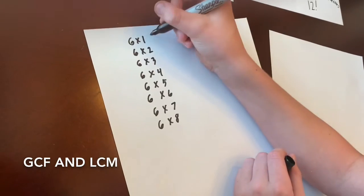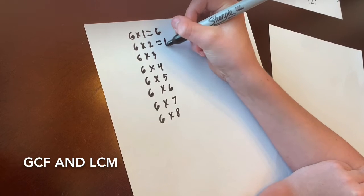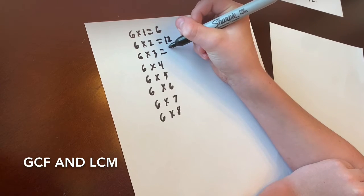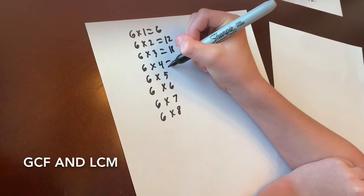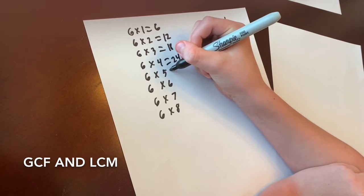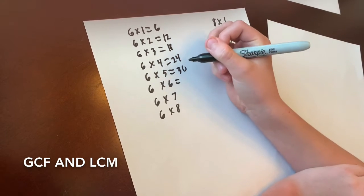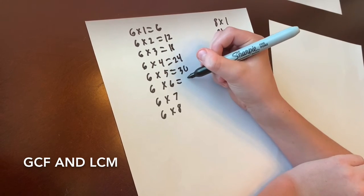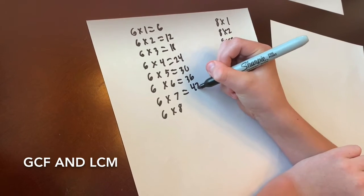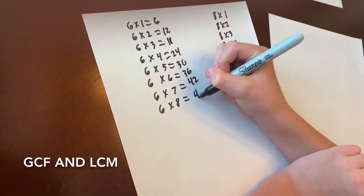So now we're going to solve for it. 6 times 1 is 6, 6 times 2 is 12, 6 times 3 is 18, 6 times 4 is 24, 6 times 5 is 30, 6 times 6 is 36, 6 times 7 is 42, and 6 times 8 is 48.